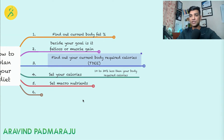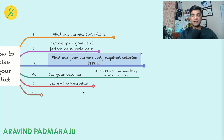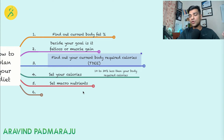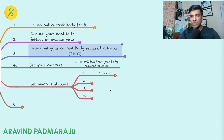Step five is knowing what exactly to eat within those calories — that's your macronutrients. All the foods you daily consume — rice, wheat, chapati, pasta — provide macronutrients. There are three main macronutrients: protein, fat, and carbohydrates. Let's go through each one step by step.